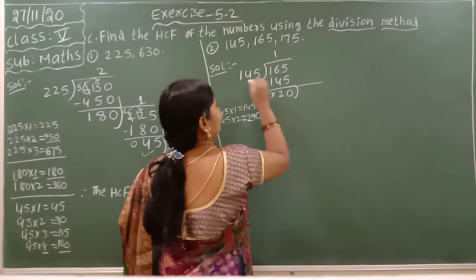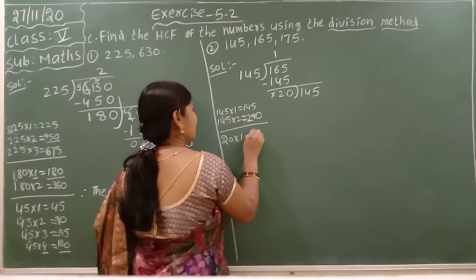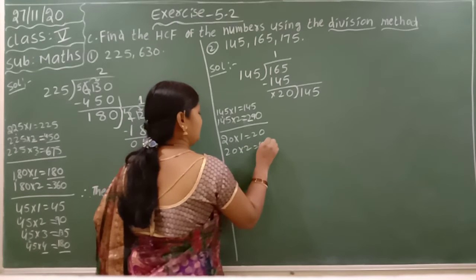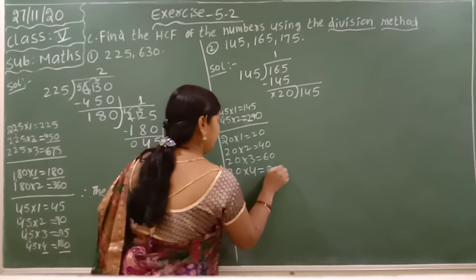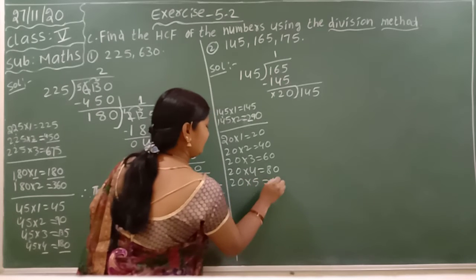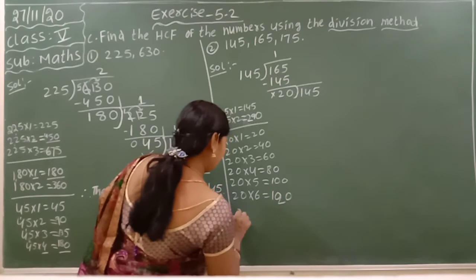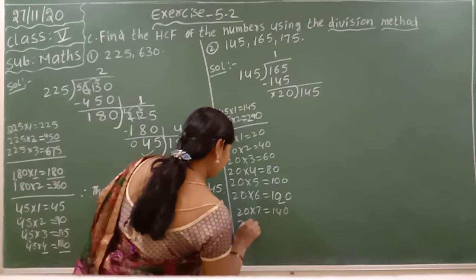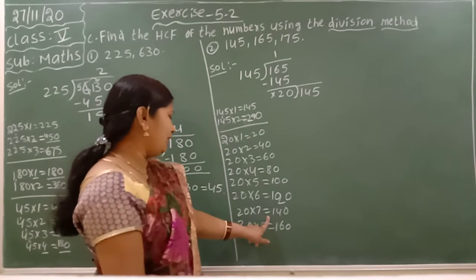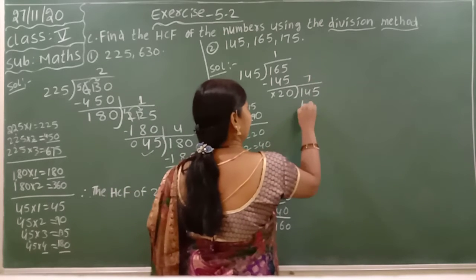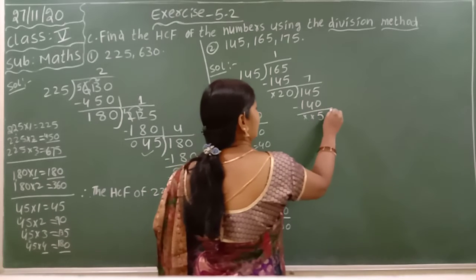Again do this with 20. Now the 20 table: 20 times 1 is 20, times 2 is 40, times 3 is 60, times 4 is 80, times 5 is 100, times 6 is 120, times 7 is 140, times 8 is 160. Here we have 145, so you have to take 20 times 7, which is 140. Minus: 5 minus 0 is 5, 4 minus 4 is 0.